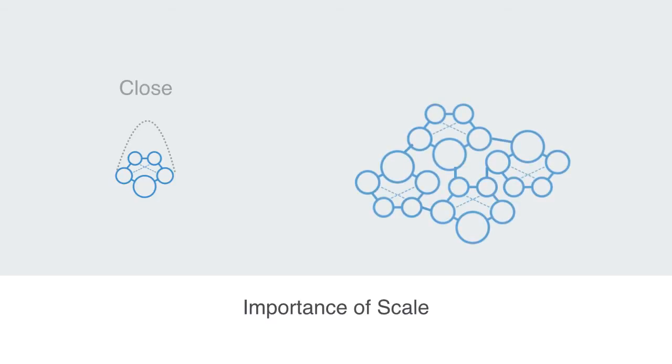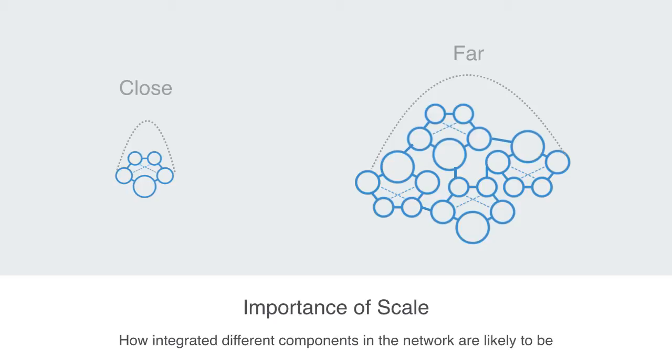The size of a network is important not so much because of the sheer quantity of elements we have to deal with, but more because it sets the context for how close or far, on average, one node in the network is from another one. And this is important because it tells us how quickly something will spread through the network, and also how integrated different components in the network are likely to be.